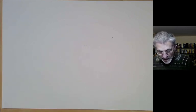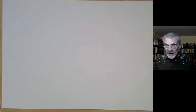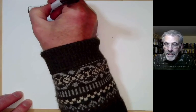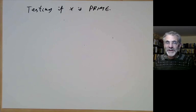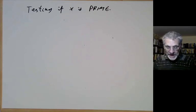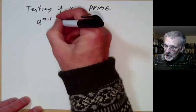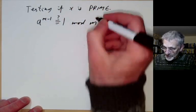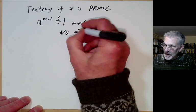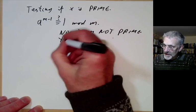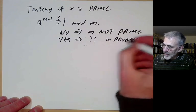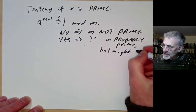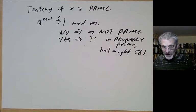Now let's discuss testing if x is prime more carefully. We have the slow method of testing lots of factors. We also saw the Fermat test: check if a to the m minus 1 is congruent to 1 modulo m. If no, then m is not prime. If yes, m is probably prime, but might be a Carmichael number — for instance 561. There are infinitely many numbers with this funny property.